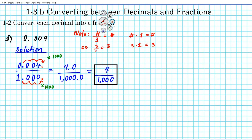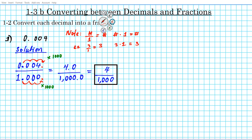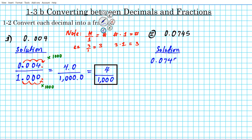Let's look at problem number two: we have the decimal 0.0745. The task is to convert this decimal into a fraction. We follow exactly the same procedure — 0.0745 divided by one. We place the one to the left of the decimal, and since there are four digits to the right we put in four zeros, giving us 1.0000 in the denominator.